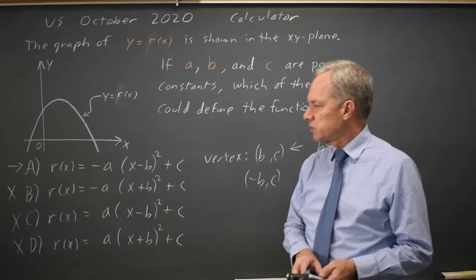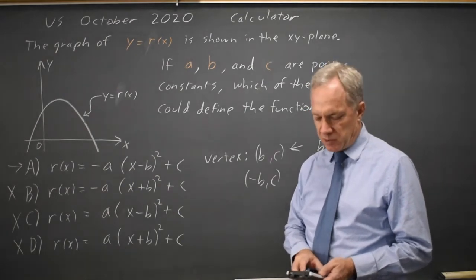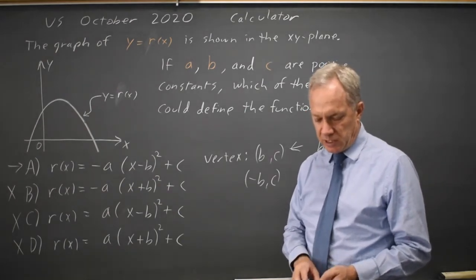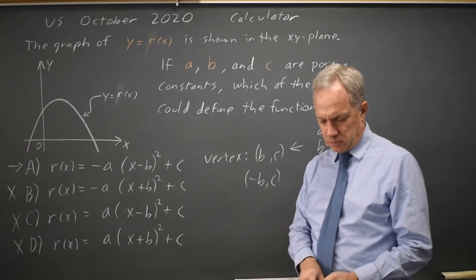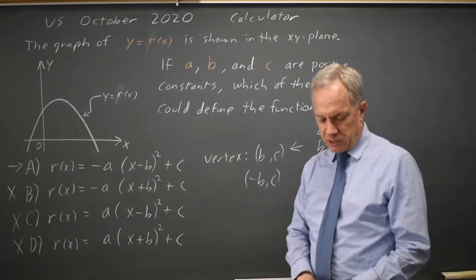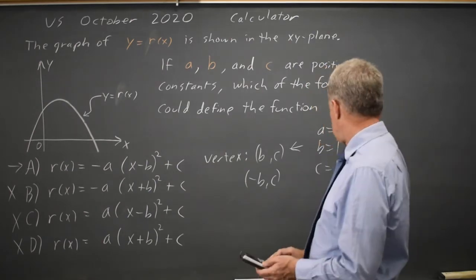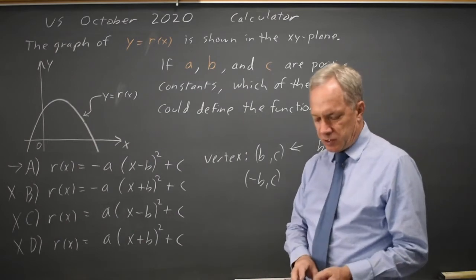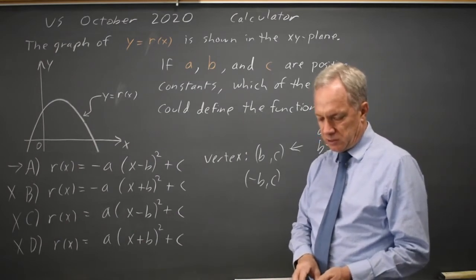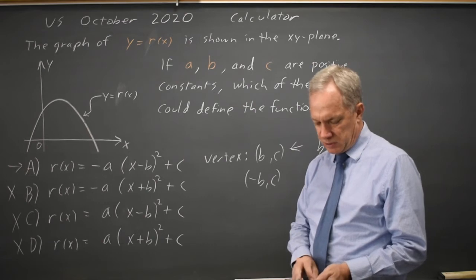If I tried choices c or d, they would open up and I'd know that wasn't right. In choice a, standard window, it looks like it goes through the origin, so I'm going to try c equals 4.